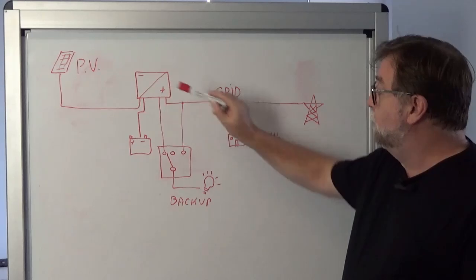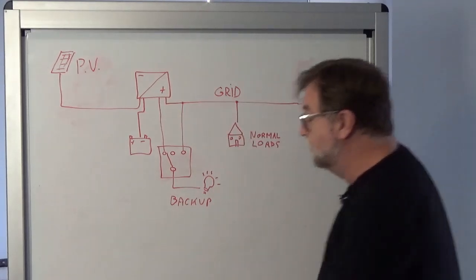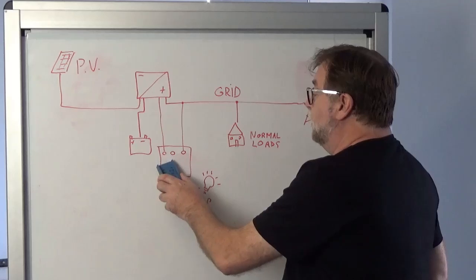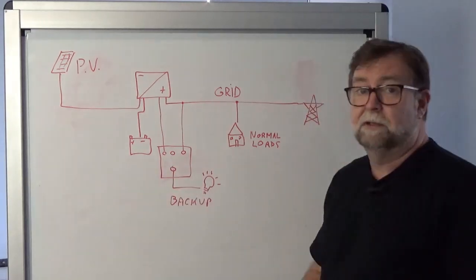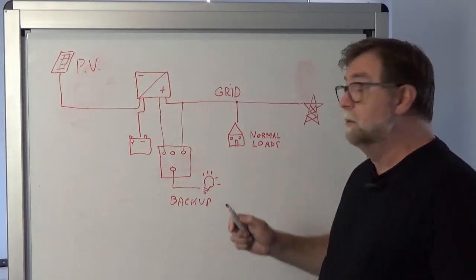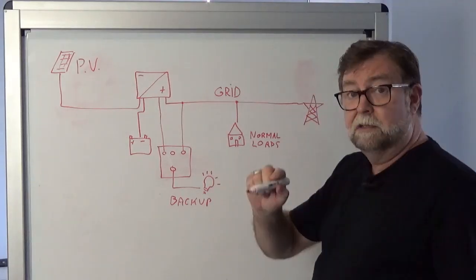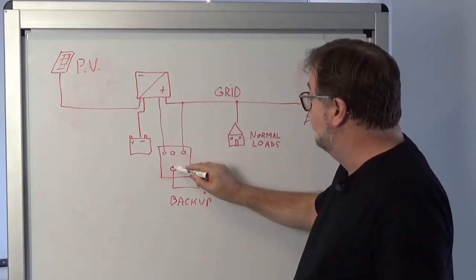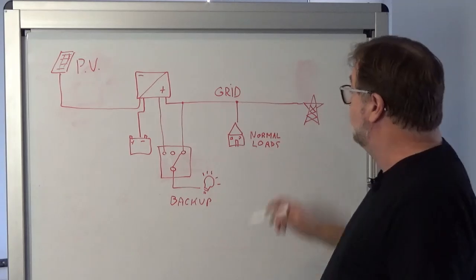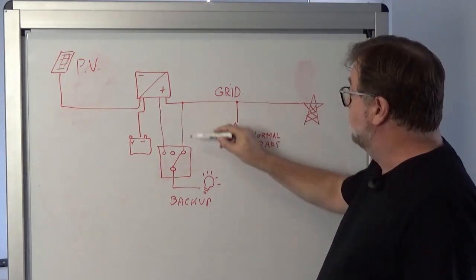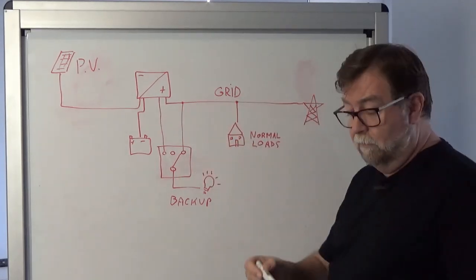Now, if something happens to the inverter, it's switched off or disconnected, you'll find no power to the backup circuits. So all the owner needs to do is go to the switchboard and flip over onto grid, and the backup loads will be supplied from the grid.